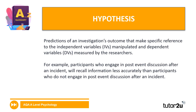Then we've got the hypothesis. The hypothesis makes a prediction about what the research is going to find. In the context of an experiment, it might make specific reference to the IV and the DV. If it's used in correlational research, it's going to make a prediction about the covariables. For example: participants who engage in post-event discussion after an incident will recall information less accurately than participants who do not engage in post-event discussion. This is a prediction about the outcome — and that's the crucial difference between an aim and a hypothesis.